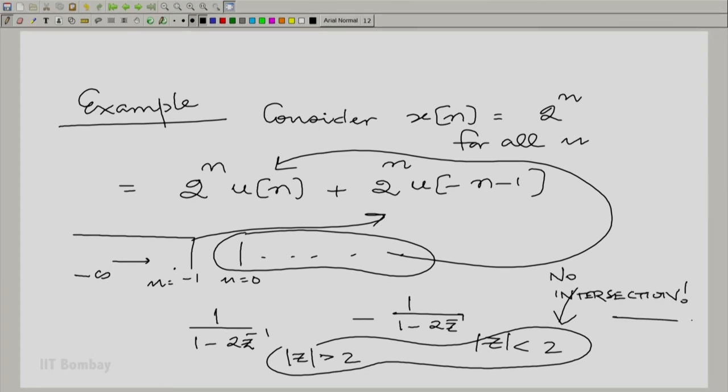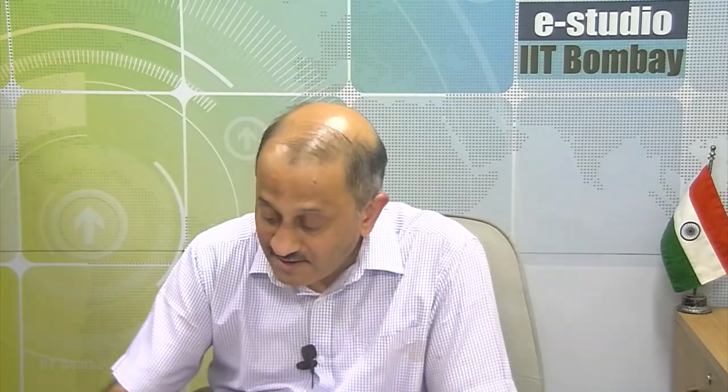The problem is, if a z transform has a null region of convergence, it means there is no z transform. So, for example, here, X(n) equal to 2^n for all n has no z transform in the traditional sense.